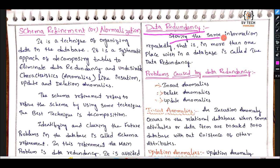Data redundancy: storing the same information repeatedly, that is in more than one place within a database, is called data redundancy. So one database, one data repeated. Data redundancy is storing the same information repeatedly in more than one place.